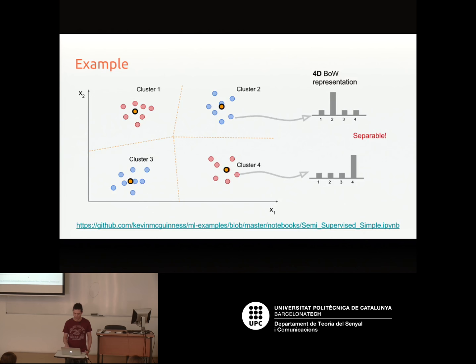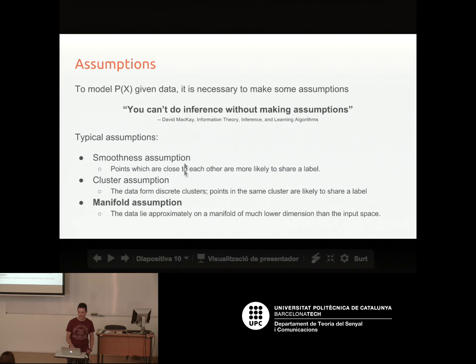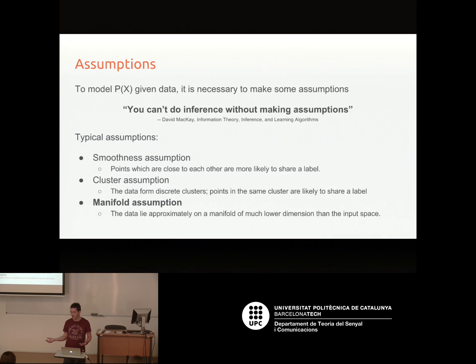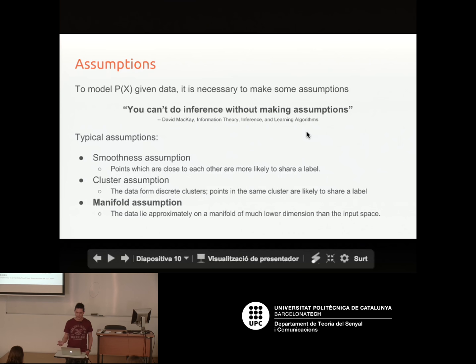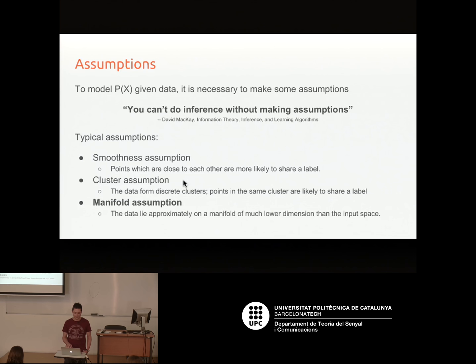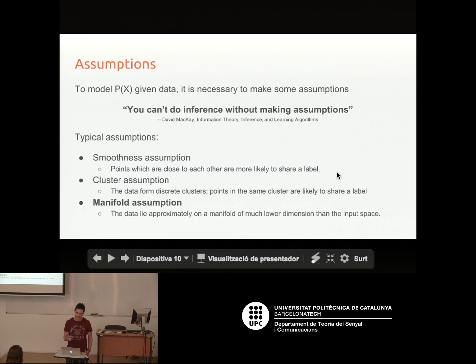So how do we model the probability of the data? You can't make much progress if you don't make any assumptions — as David MacKay said, you can't do inference without making assumptions. The typical kinds of assumptions are that the data is smooth — points close together share a label or have similar latent variables — or the cluster assumption, that data is clustered into discrete groups that may share labels. Or the manifold assumption, which this lecture focuses on: the data lies approximately on a manifold of much lower dimension than the input space.